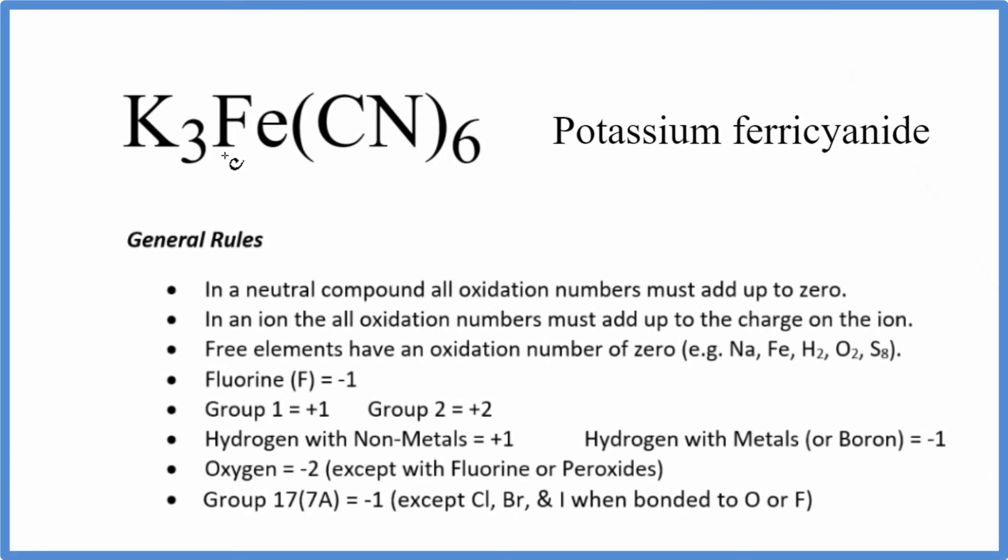In this video, we'll find the oxidation numbers for each element in K3Fe(CN)6, potassium ferocyanate. First, we need to realize there's no negative or positive sign after this formula. That's because it's a neutral compound. All the oxidation numbers are going to add up to zero.